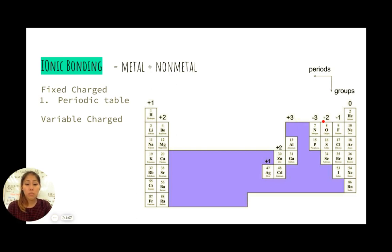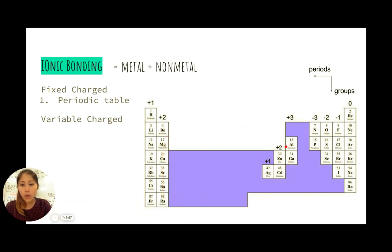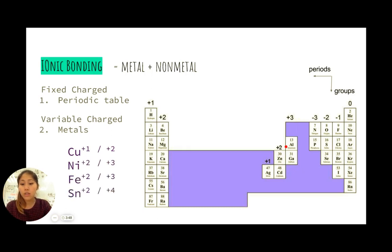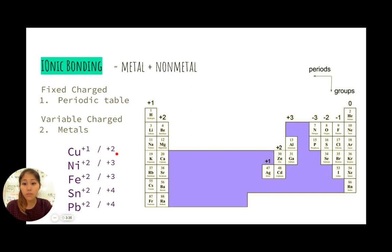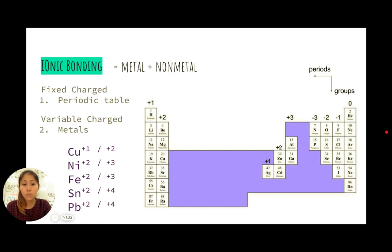Variable charges are the ones that may have more than one charge, and these are usually in the transition metal section. Key variable charge metals to be aware of are copper, nickel, iron, tin, and lead. Copper can have a +1 or +2 charge depending on what it bonds with. Nickel can be +2 or +3. Iron is the same. Tin and lead are both either +2 or +4.